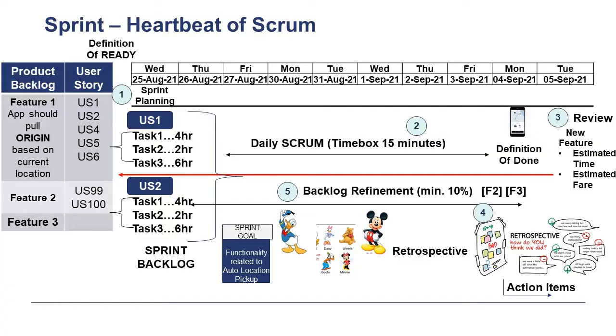So we have seen the five events in Scrum. I talked about sprint planning, daily Scrum, sprint review, and sprint retrospective. Many of you may be wondering what the fifth event is — it is actually the title of this video: the sprint itself. The sprint is regarded as an event which is a kind of an envelope or container for all these four events — sprint planning, daily Scrum, sprint review, and sprint retrospective. That constitutes the five events of Scrum.